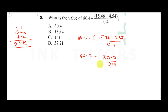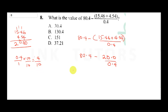Now to perform 20 divided by 0.4, we convert 0.4 to a fraction by multiplying both the numerator and denominator by 10. So 0.4 becomes 4 over 10. We represent this as 80.4 minus 20 divided by (4 over 10).